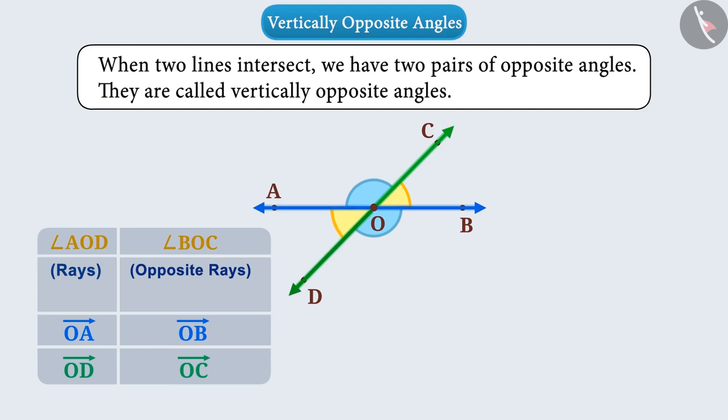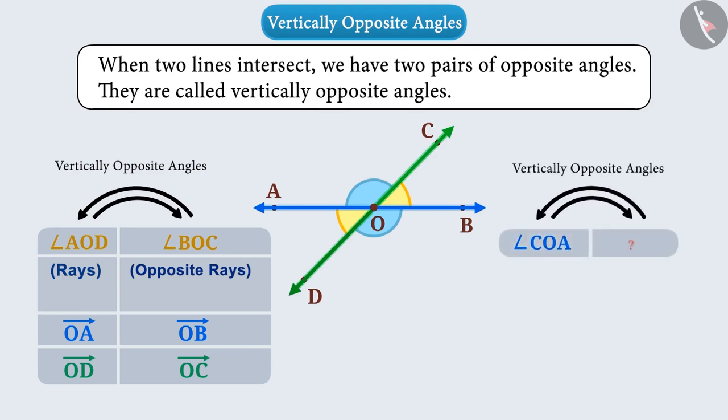Angle AOD and angle BOC are the opposite angles of each other. So will you now be able to find the vertically opposite angle of angle COA? Let's find out!